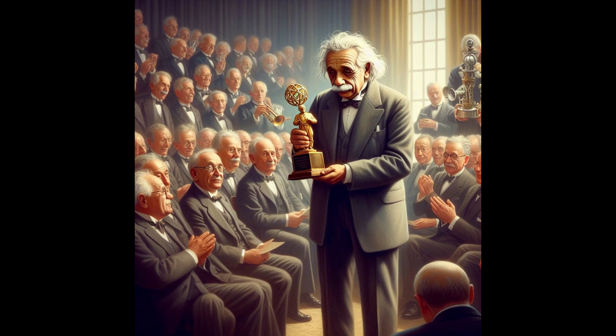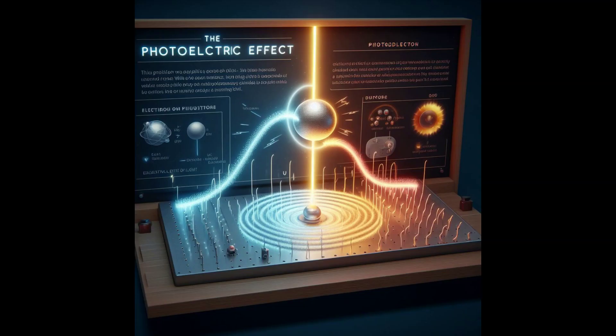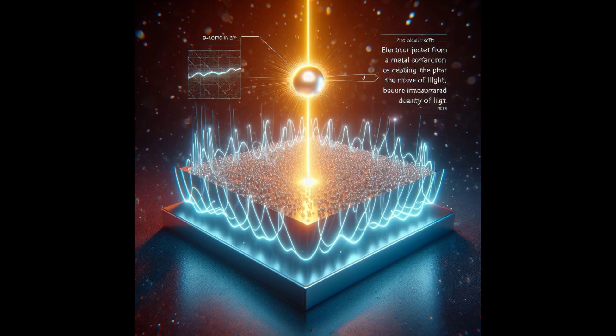Nobel Prize. In 1921, Einstein was awarded the Nobel Prize in Physics. But guess what? It wasn't for relativity. It was for his explanation of the photoelectric effect, which laid the foundation for quantum mechanics and modern electronics. It's like the guy couldn't stop revolutionizing science.